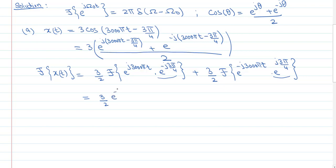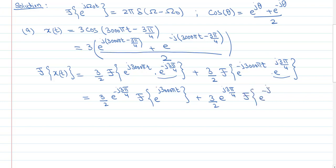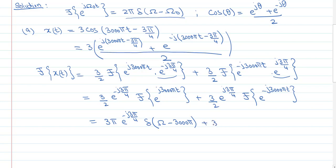So I get (3/2)·e^(−j3π/4) times the Fourier transform of e^(j3000πt), plus (3/2)·e^(j3π/4) times the Fourier transform of e^(−j3000πt). Applying the formula, the 2π from the formula cancels with the 2 in the denominator, giving: 3π·e^(−j3π/4)·δ(ω − 3000π) + 3π·e^(j3π/4)·δ(ω + 3000π).